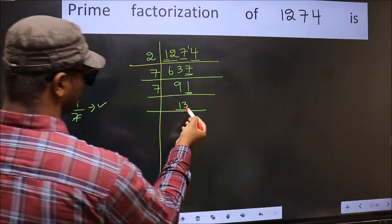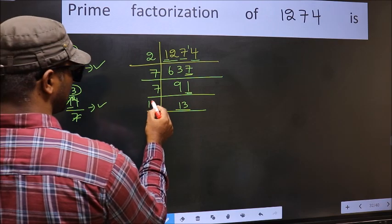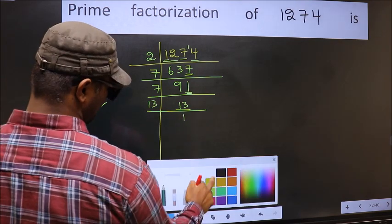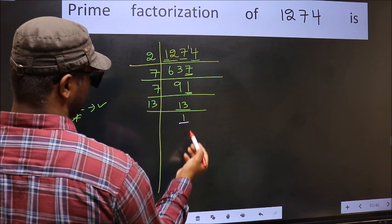Now we have 13. 13 is a prime number. So 13 times 1 is 13. So we got 1 here.